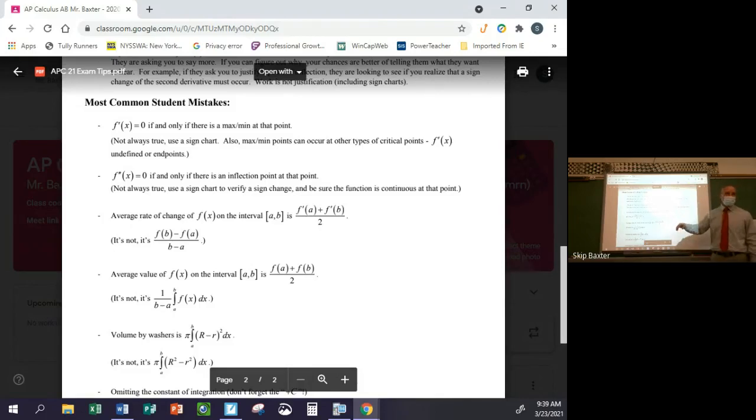All right. Most common student mistakes. This is, like, I got this off the internet. I didn't make this stuff up. But it's true. I mean, I definitely see this in work that I've graded over the years. First thing is that the derivative is zero if and only if there's a max min. That's not true. Right? It's possible it could increase and then flatten out and then increase again. That's not a max min. It's also possible that max min could occur at a point where the derivative is undefined, not zero, or at an endpoint.